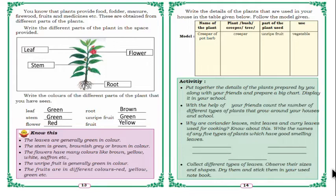For the next activity, write the name of the plant, its type (creeper, tree, climber etc.), the part used, and how it is used. One example is given: a pot herb vegetable — it is a creeper and we use its unripe fruit as a vegetable. Peas plants are climbers and we also use their unripe fruit as a vegetable.